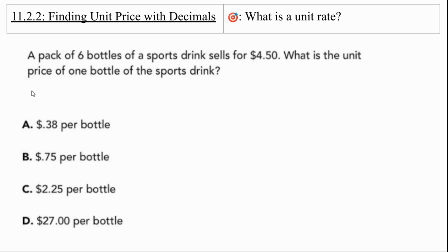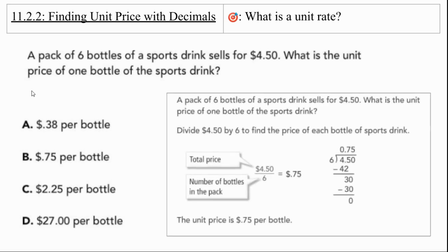Let's do another practice problem. A pack of six bottles of a sports drink sells for $4.50. What is the unit price of one bottle of a sports drink? If I was setting up my table, I would go price, then quantity. If I'm setting it up as a ratio, I'm going to go price over quantity. Remember that we're doing that division there, and you can use a calculator. So we're going to get 75 cents per bottle.